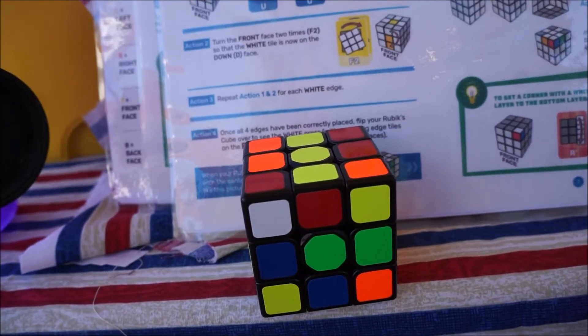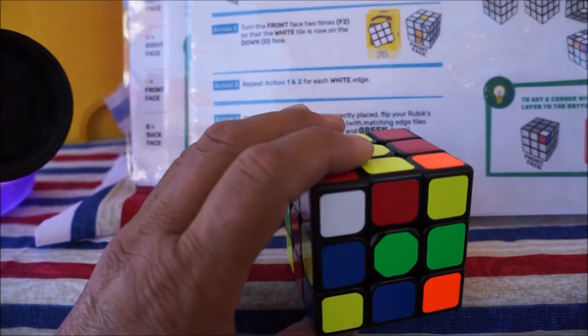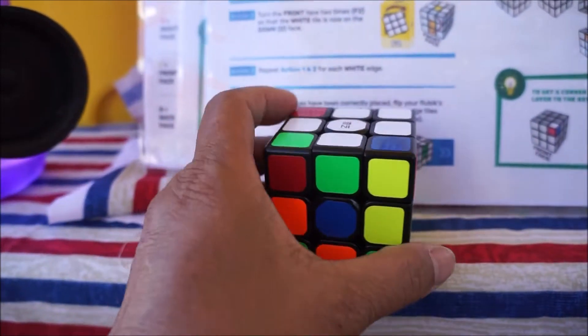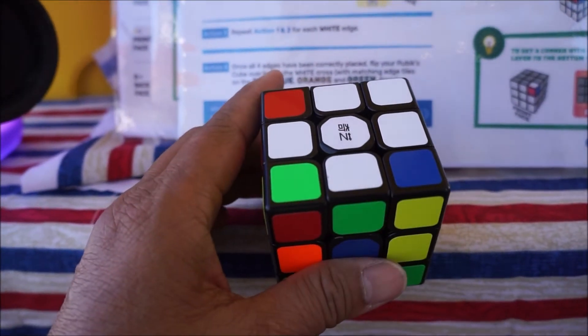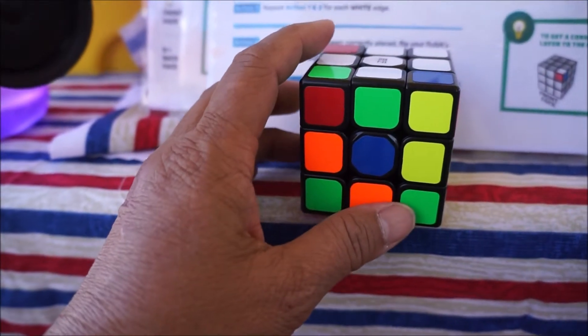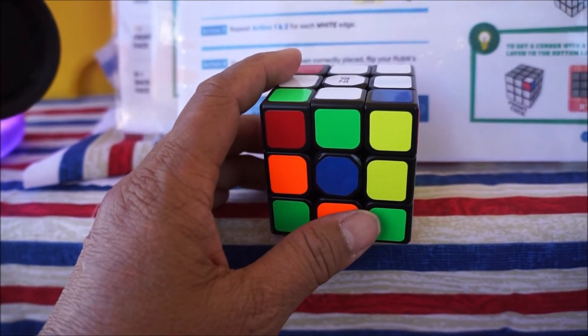Once all four edges have been placed, flip your Rubik's Cube over to see the white cross with matching edge tiles on the red, blue, orange, and green faces.